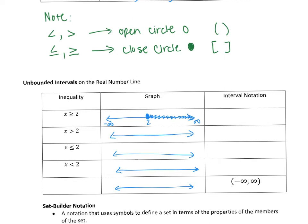That tells me my interval notation is going to be between two and infinity. I use a bracket on two because it's a closed circle. But what do I put on infinity? Can you ever touch infinity? No, because it goes on and on forever — you can't touch it. If you can't touch the number, you can't equal it, so you always use a parenthesis. I always ask myself: can I touch infinity? No. So I use a parenthesis: [2, ∞).